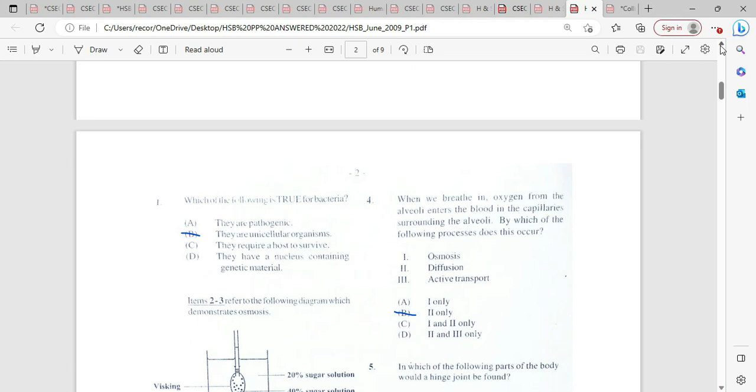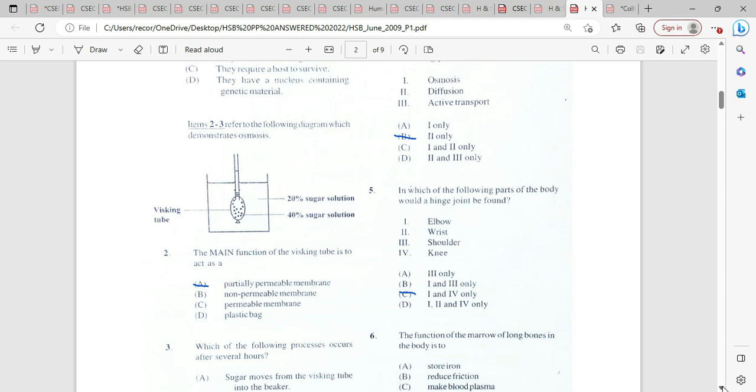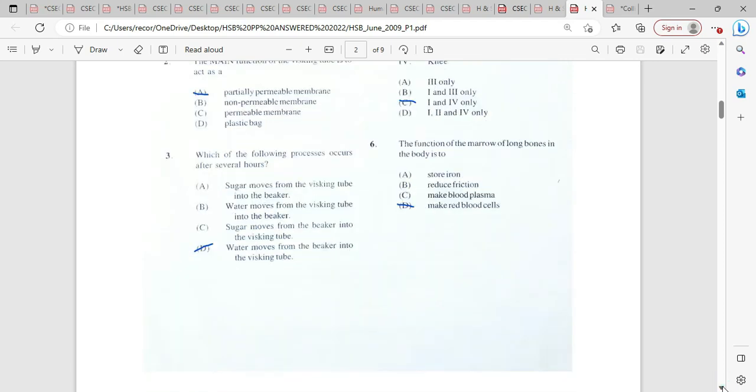Number 4. When we breathe in, oxygen from the alveoli enters the blood in the capillaries surrounding the alveoli. By which of the following process does this occur? It's going to be by diffusion. Number 5. In which of the following parts of the body would a hinge joint be found? Elbow, wrist, shoulder. That's going to be our elbow and knee. Number 6. The function of the marrow of long bones in the body is to make red blood cells. So D we chose as D.